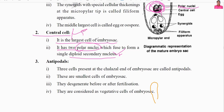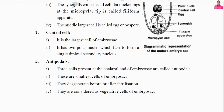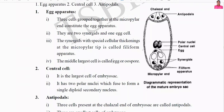Next are the antipodals. The antipodals are located towards the chalazal end. Towards the chalazal end there are three cells called antipodals. After fertilization, these antipodals may disintegrate and disappear. So the antipodals have no significant function — they disintegrate or disappear either before or after fertilization.